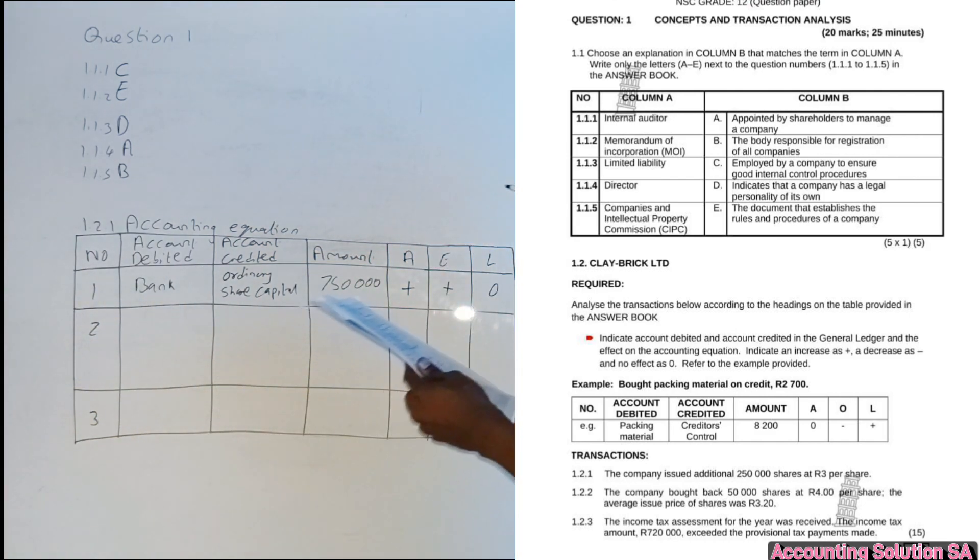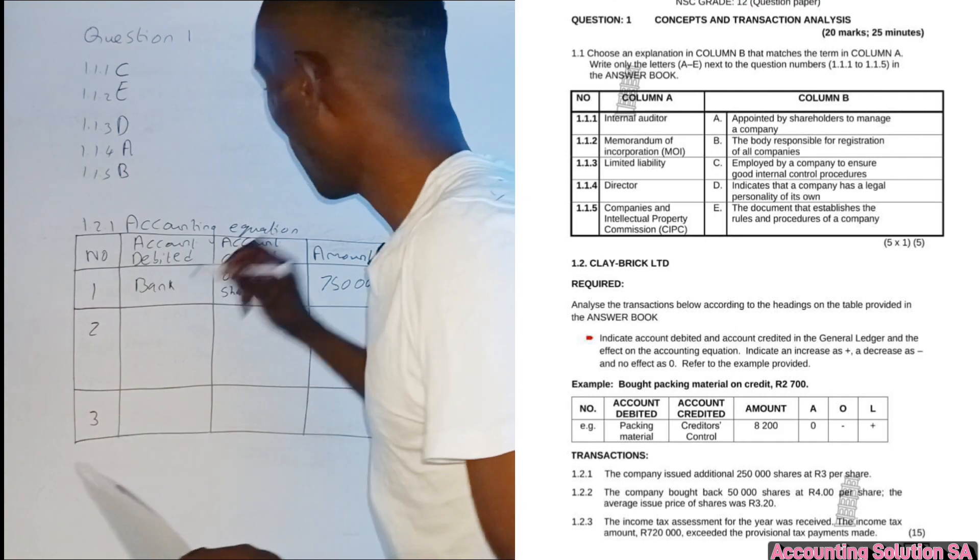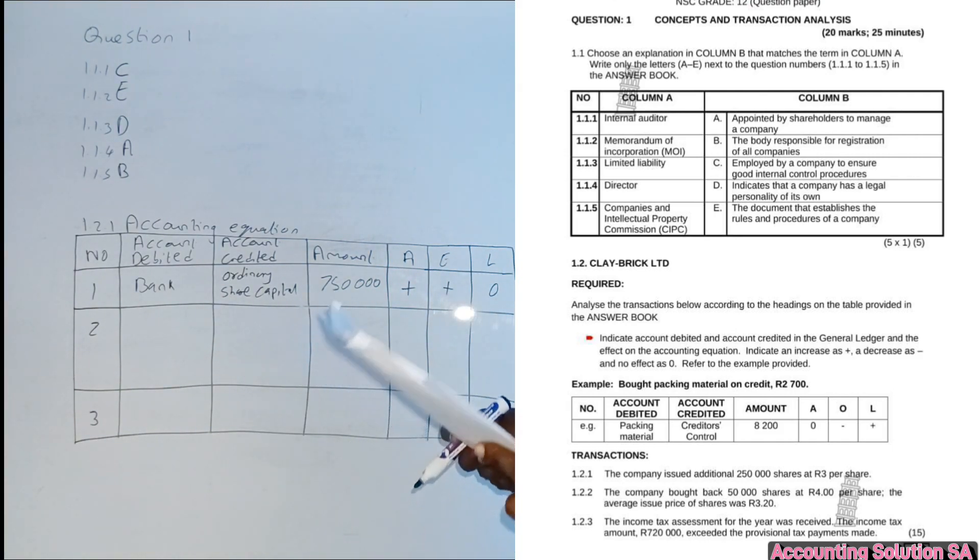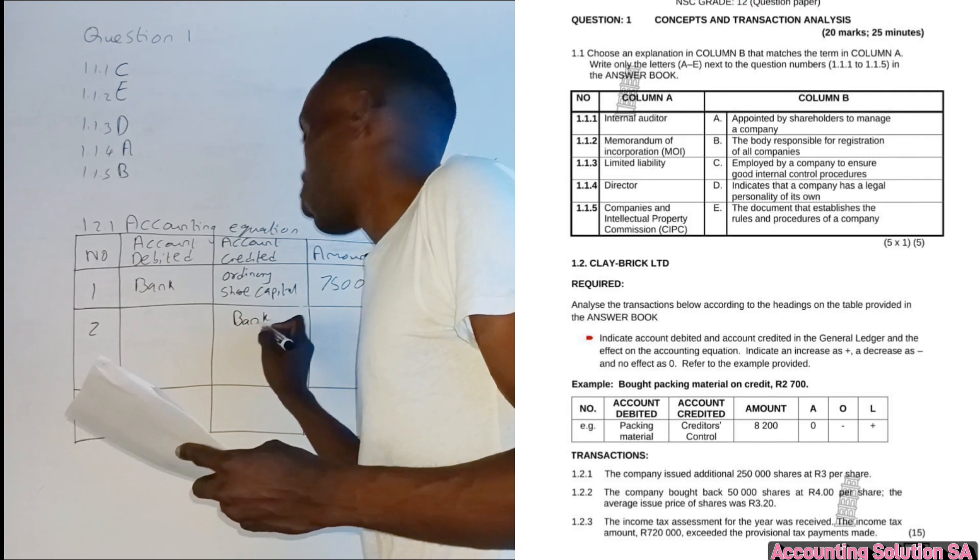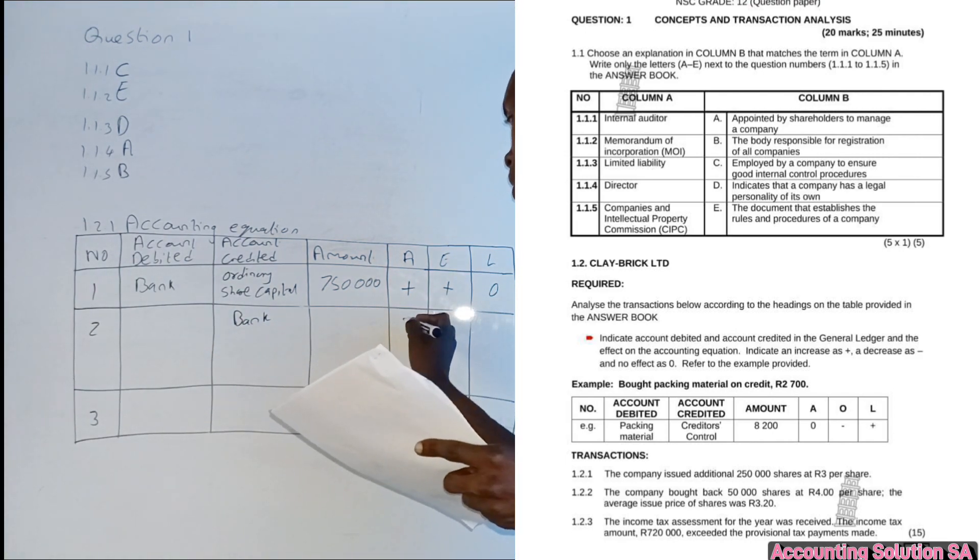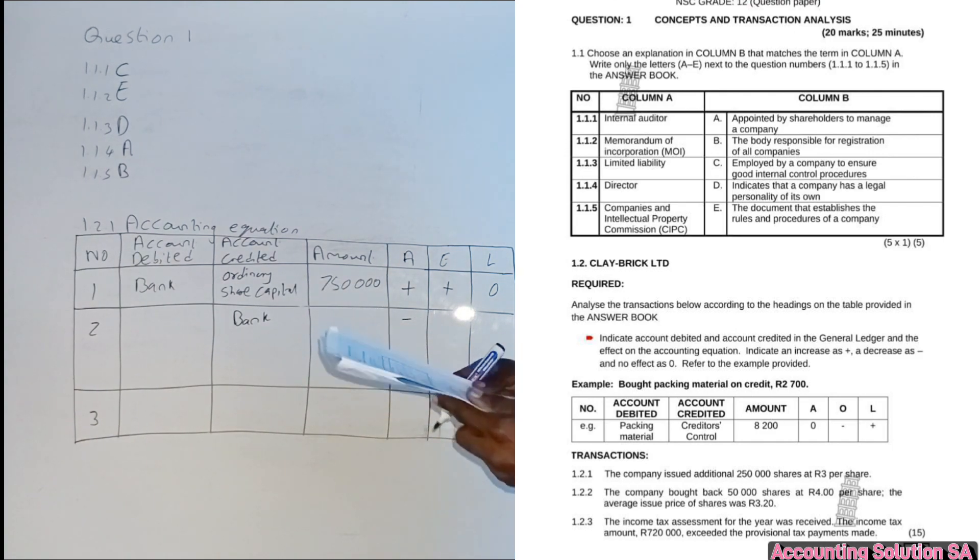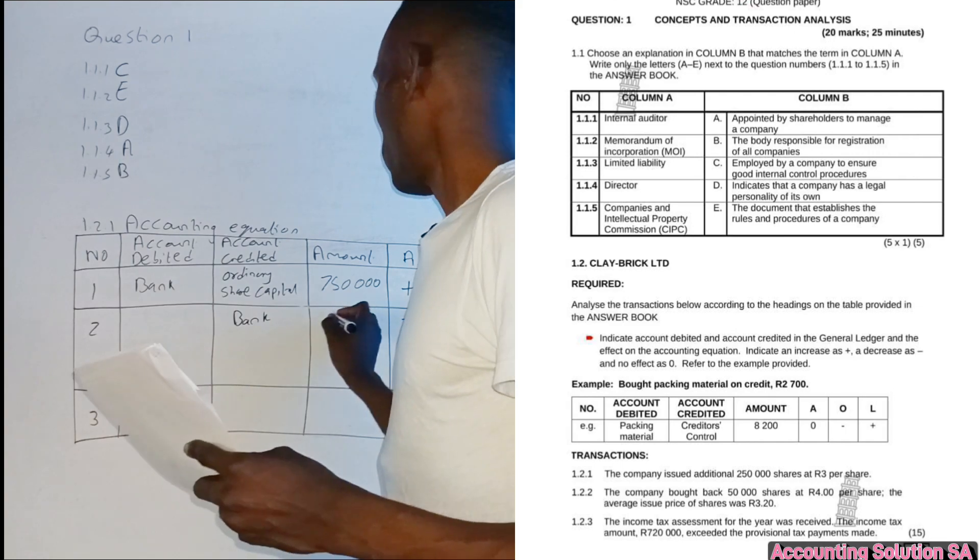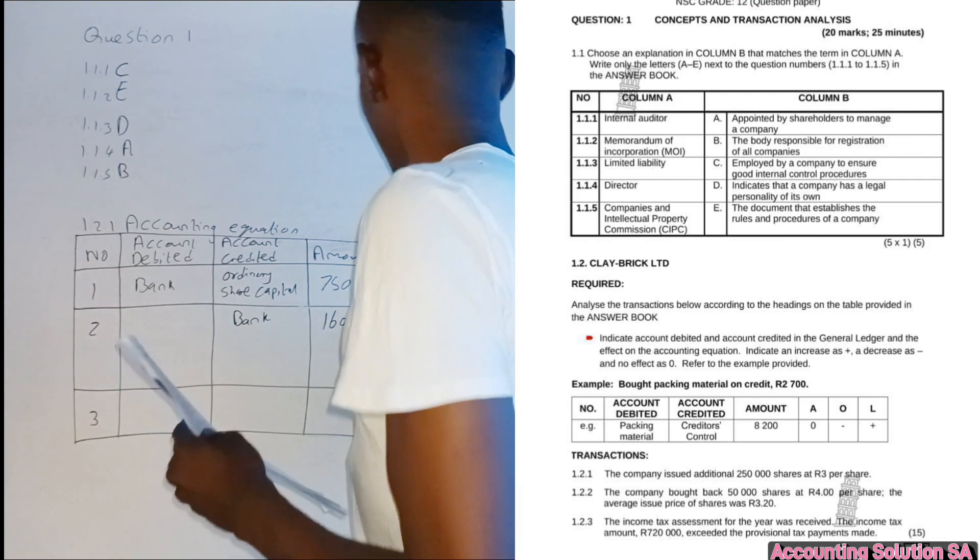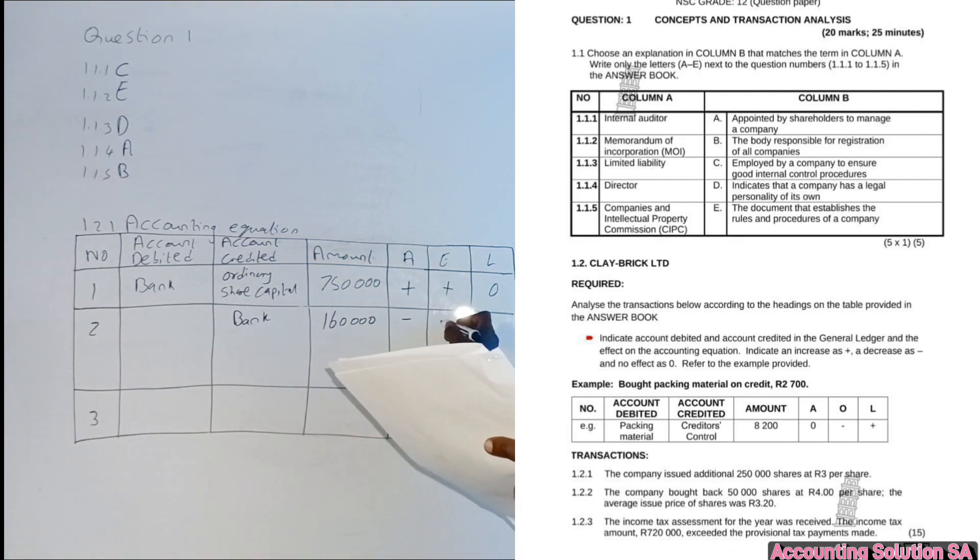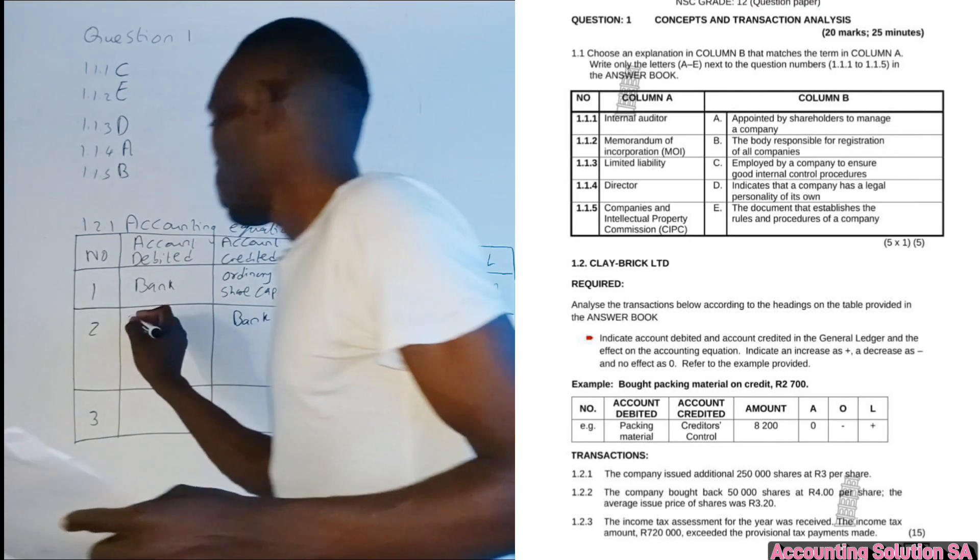Let's start with the first one, the average which is going to affect ordinary share capital. Because in this case we bought back, which means our bank is going to decrease. We pay money to those shareholders so that we can get back our shares. It's going to be minus. You are going to say 50,000 by 3.20, then you get R160,000. What are we going to debit? We bought back shares, which means our shareholders we have to remove them from ordinary share capital account.